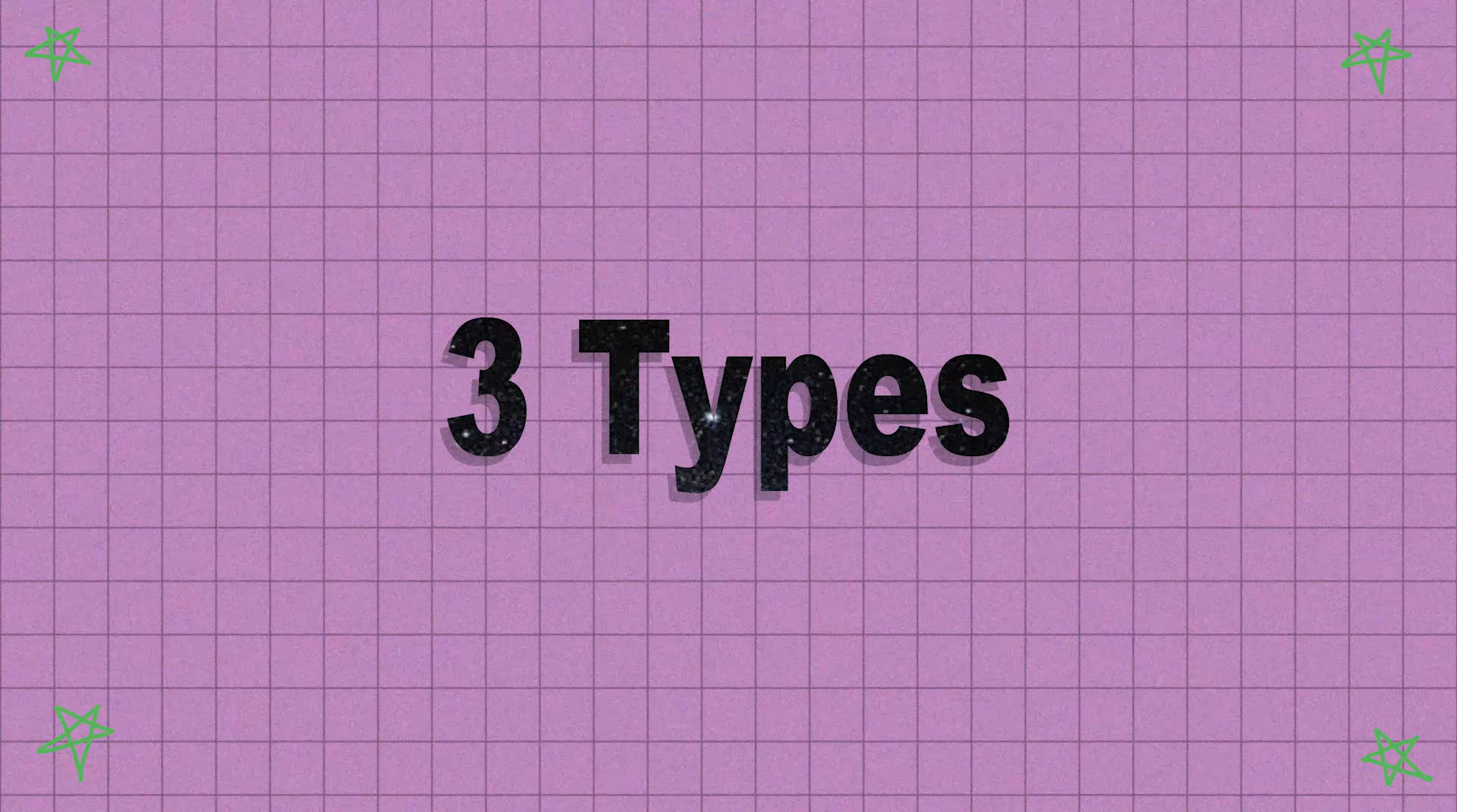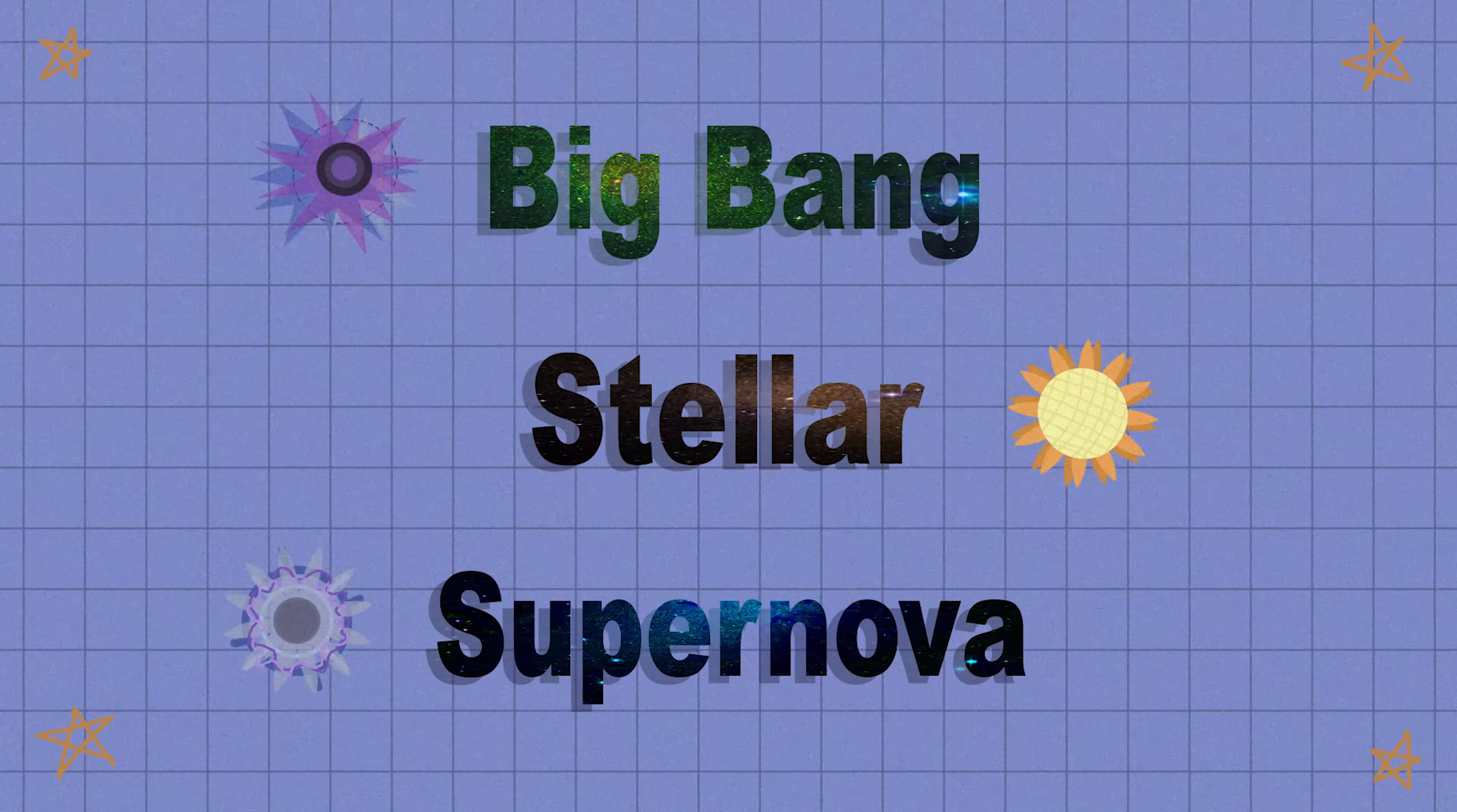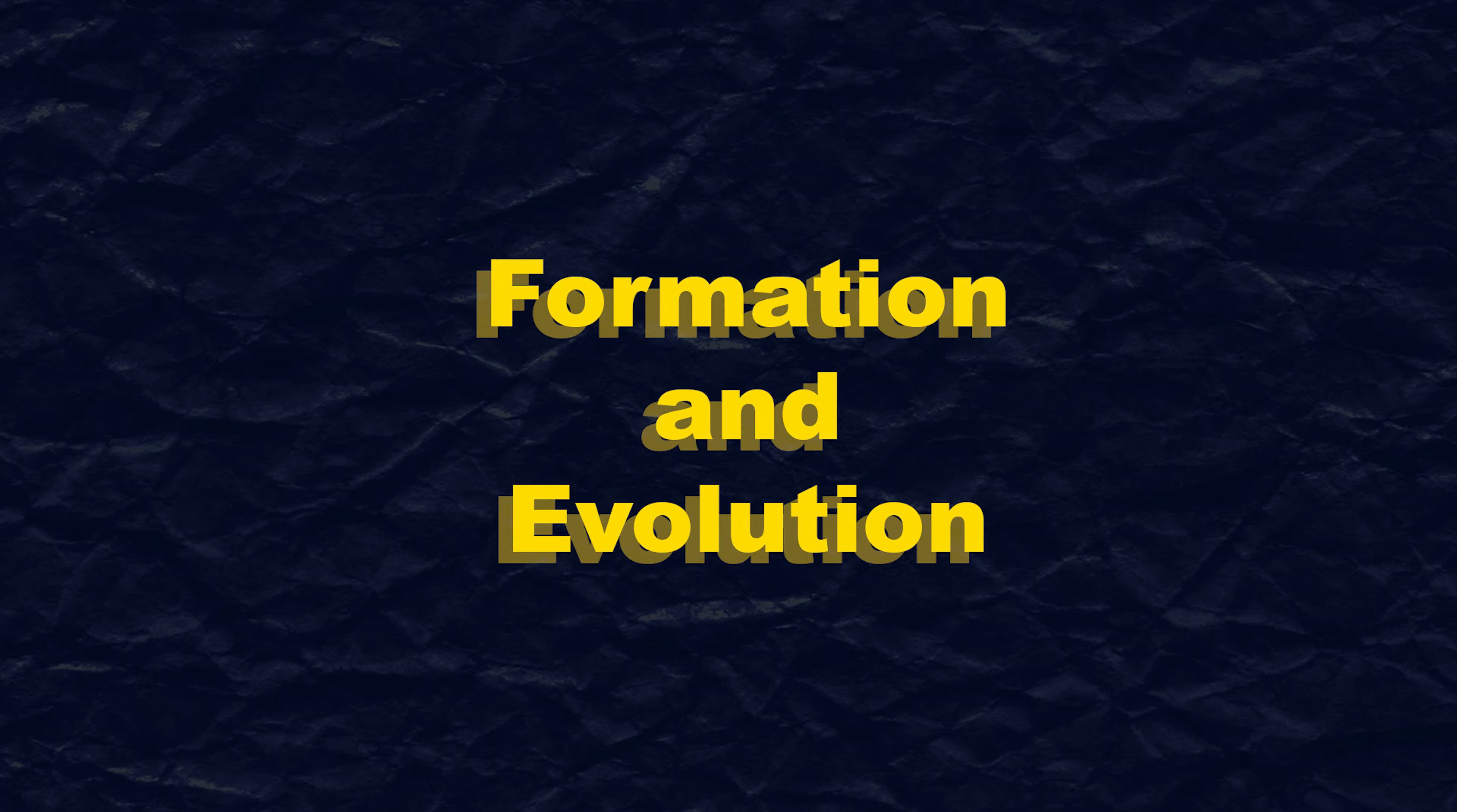There are three types of nucleosynthesis: Big Bang, Stellar, and Supernova. These are all related to the formation and evolution of the universe.